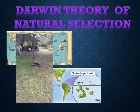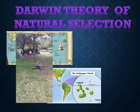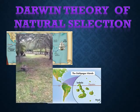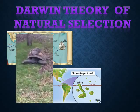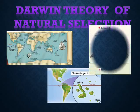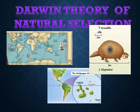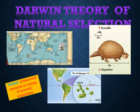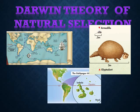Darwin also noticed that different yet related animal species often occupy different habitats within a local area — species vary locally. In addition to collecting specimens of living species, Darwin also collected fossils, which scientists already knew to be the preserved remains or traces of ancient organisms. Darwin noticed that some fossils of extinct animals were similar to living species.